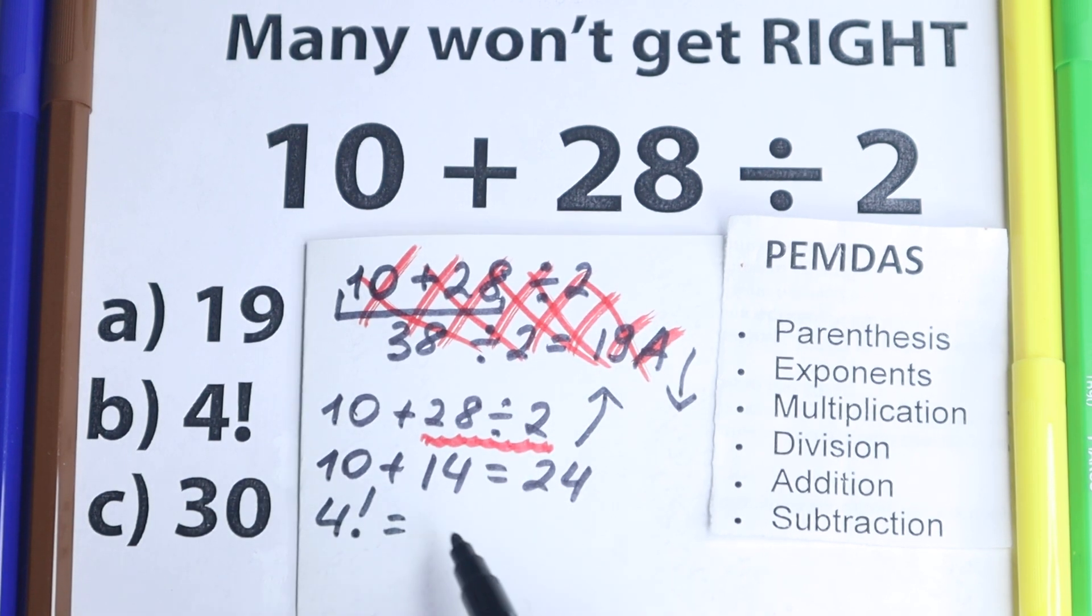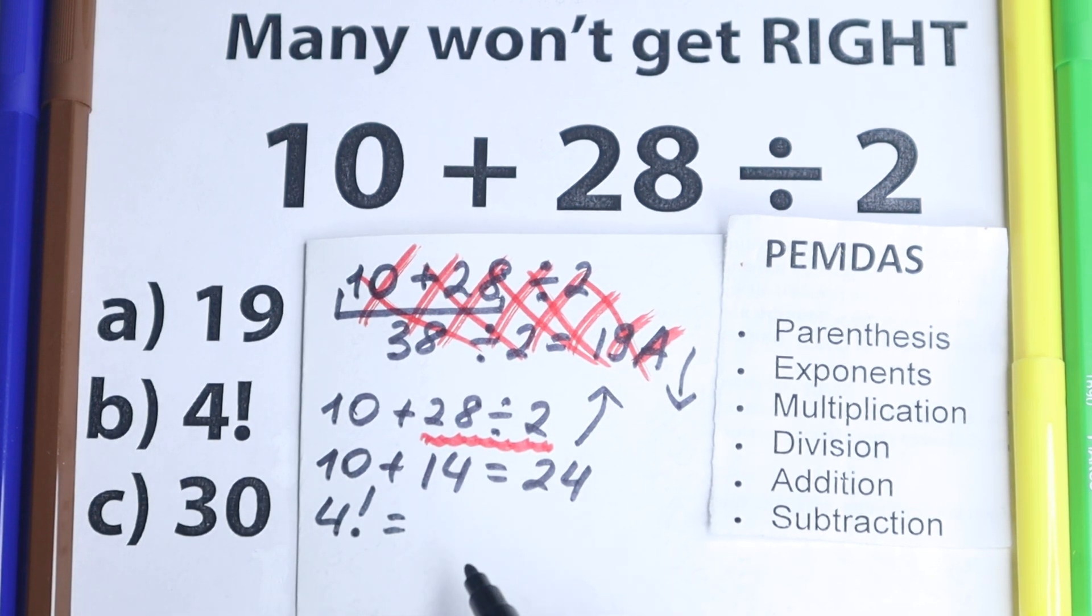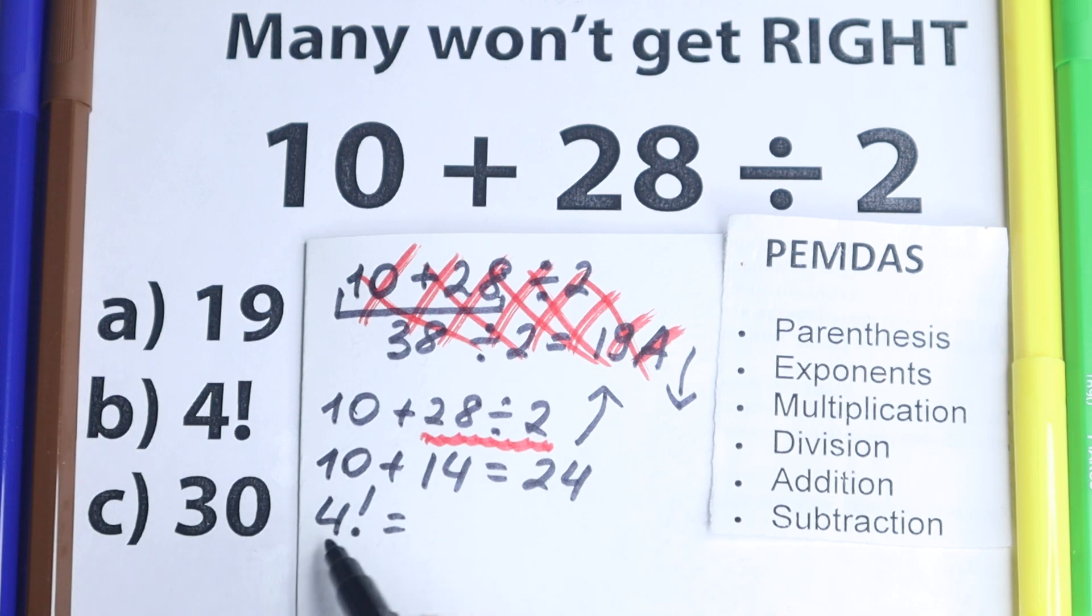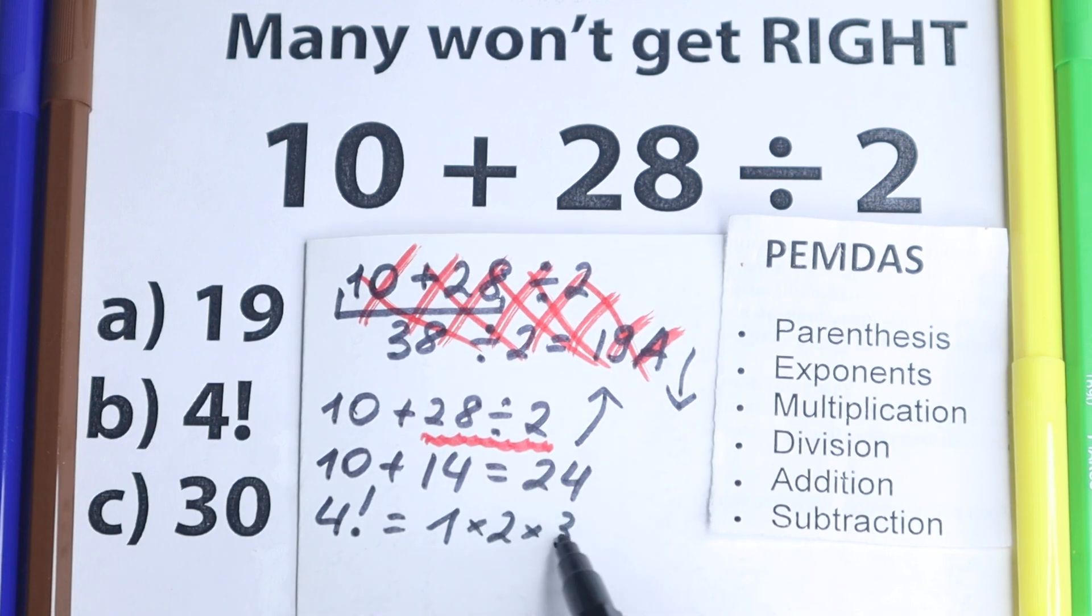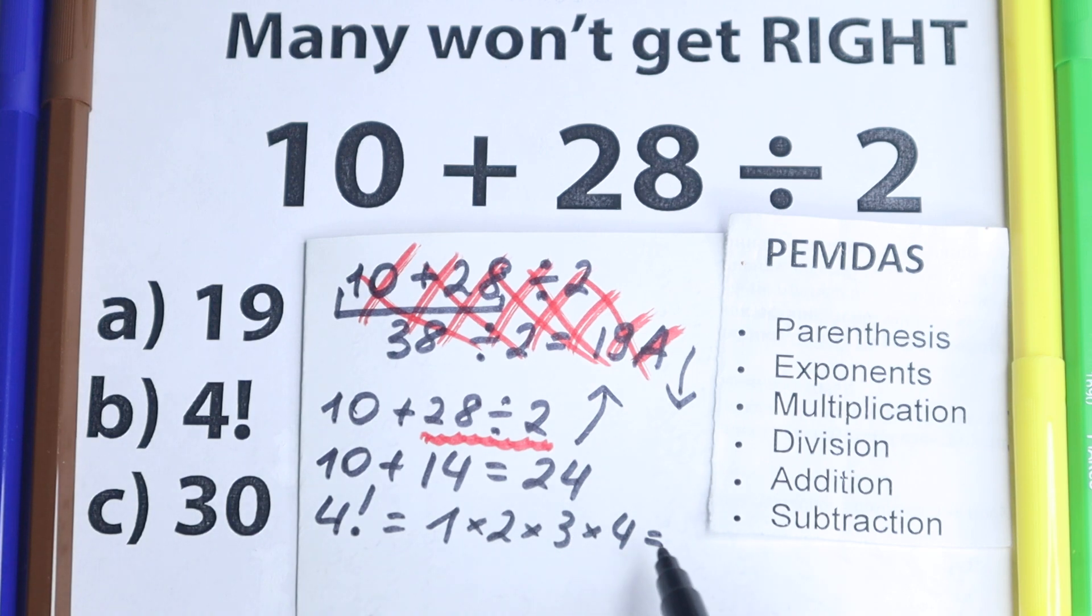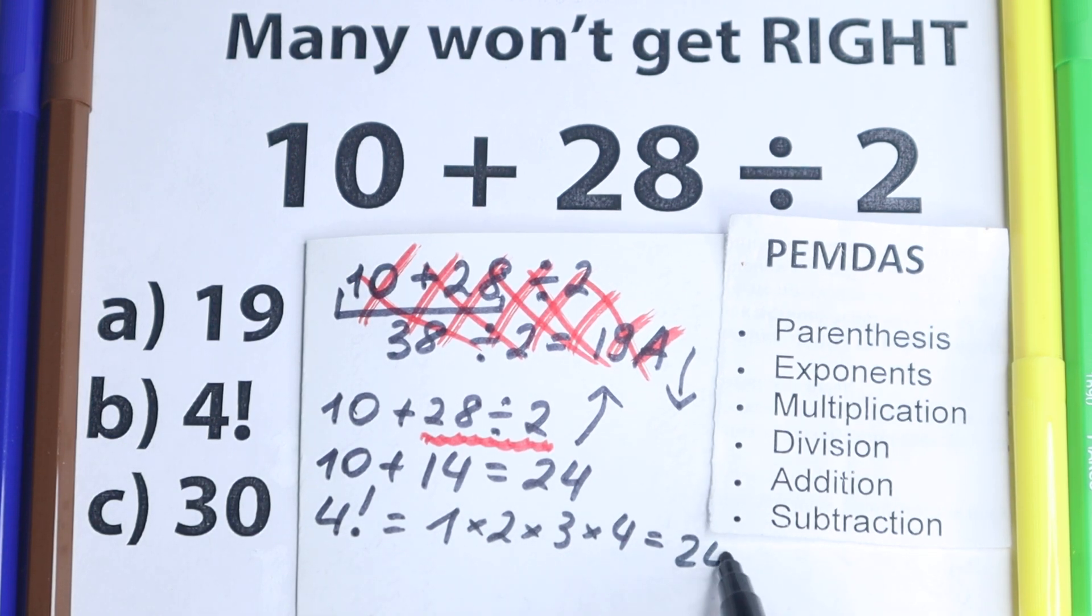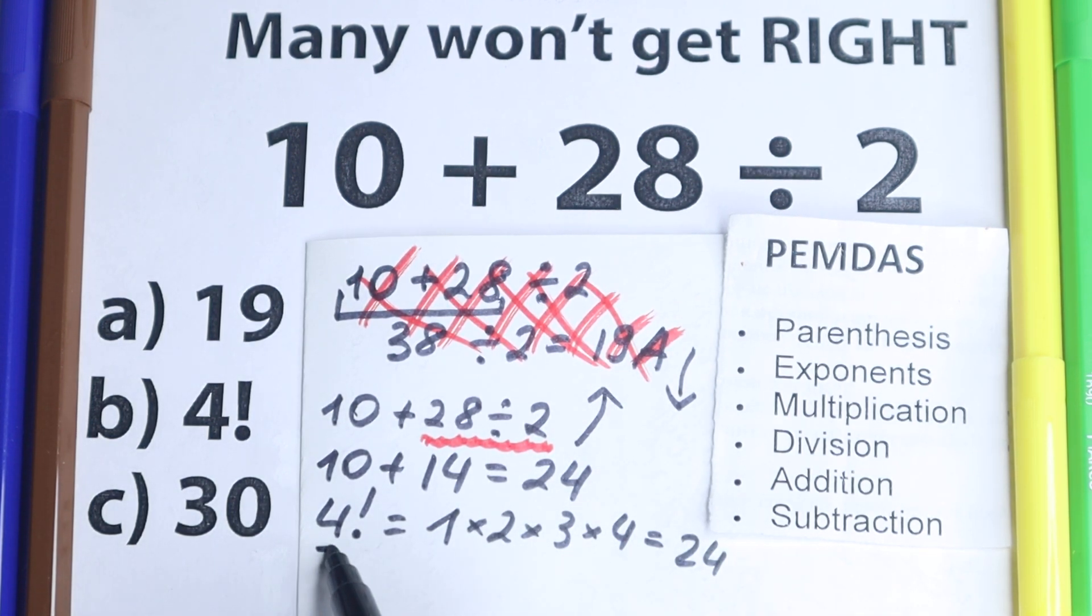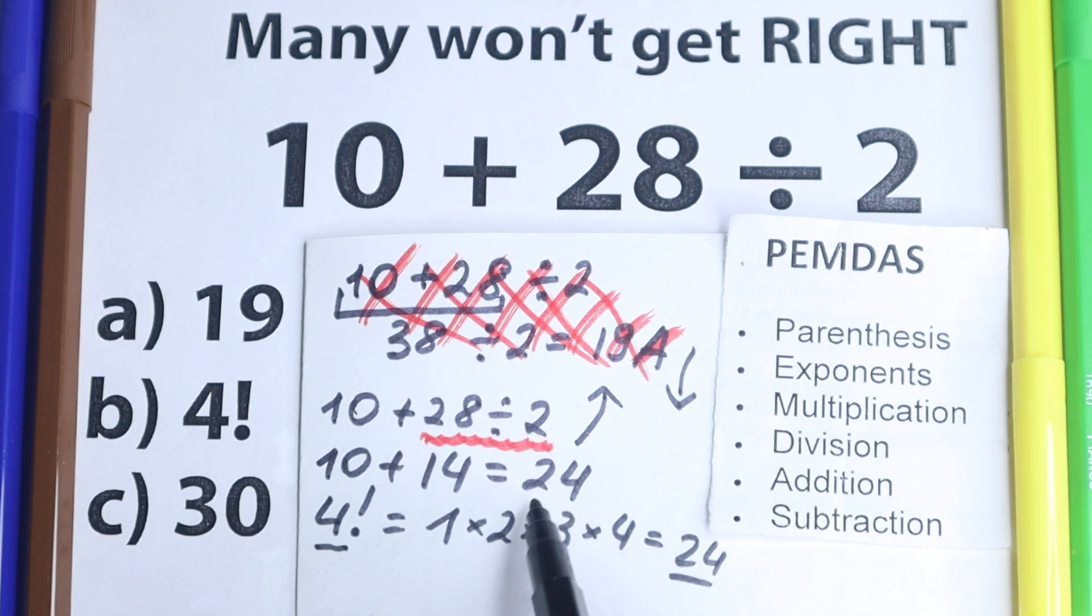Because we know that 4 factorial, doesn't matter, 4 factorial, this is a product from 1 to this number, until this number. And let's look at it. We have 1 times 2 times 3 and times 4, which is equal to, like we have 2 times 3, we have 6 times 4, we have 24. So 4 factorial, this is the same as 24. But 24, this is our answer.